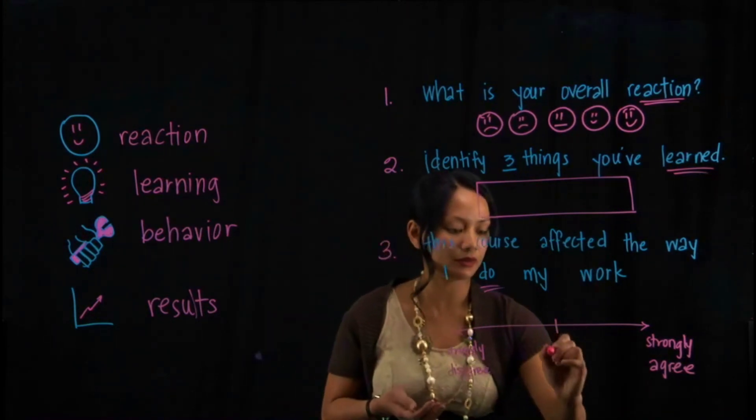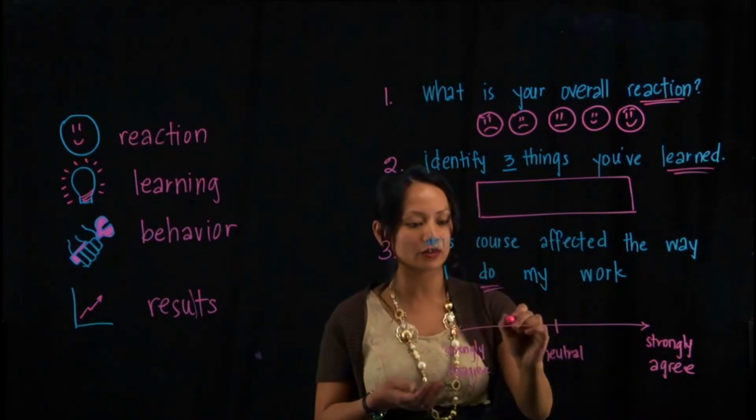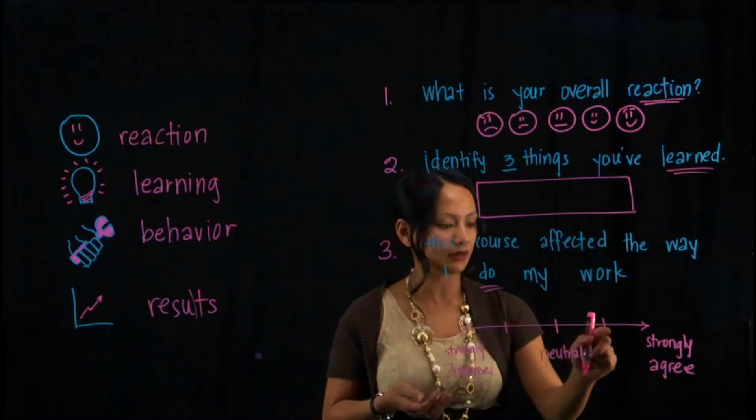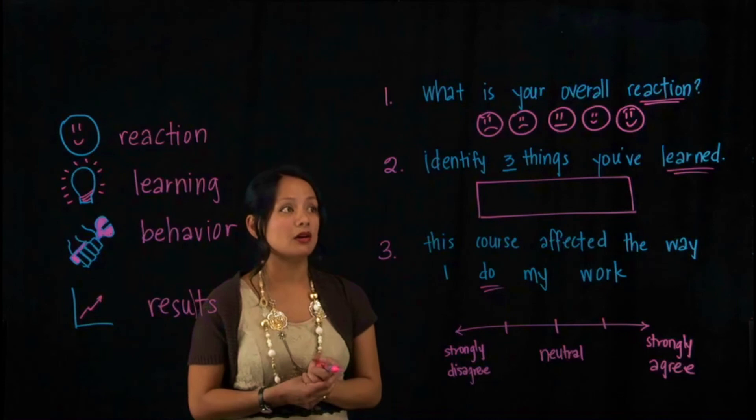And of course, in the middle, whether they're neutral about the statement in general. And of course, try to provide enough variance, usually about five spaces is all that you need.